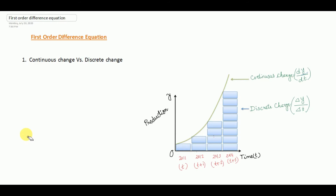Let us see the graph. In this graph, this curve shows the continuous change of production y with respect to the change in time. So when time changes continuously with no lag, the production also changes without any gap. This is represented by differentiation.